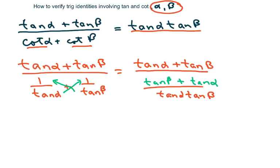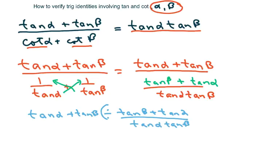Now what this means is we have tan of alpha plus tan of beta divided by tan of beta plus tan of alpha over tan of alpha tan of beta. Now change this to a multiply sign.